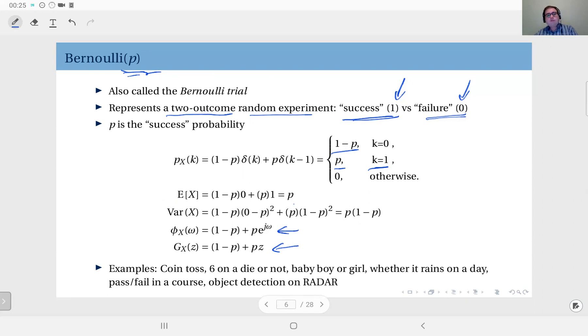So in which scenarios can we use the Bernoulli trial? Naturally, for a coin toss, this is a Bernoulli trial, which if you have a fair coin, that's a Bernoulli trial with p equals one-half. Six on a die or not? A die throw, well, clearly the sample space is one to six, so it's not a two-outcome random experiment.